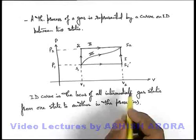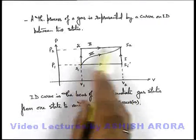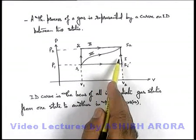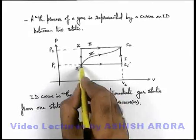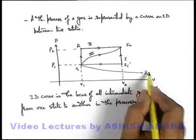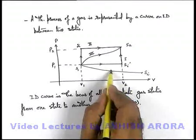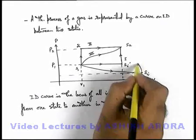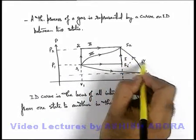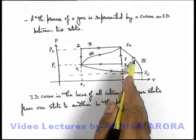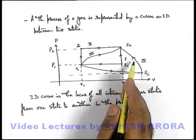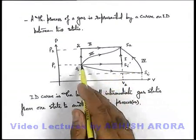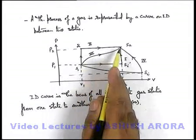In paths 1 and 2, the path is composed of two processes — one isobaric and one isochoric. There may be other kinds of paths, like from S1 to some intermediate state S-i1 where the volume is excessively increased and pressure decreased, and then the gas is taken to S2. This is path 4, which is also composed of two different thermodynamic processes according to which we are changing the gaseous state from S1 to S2.